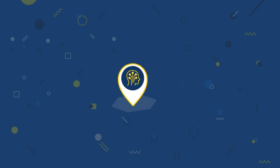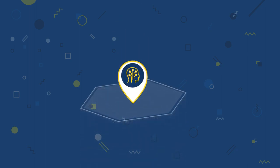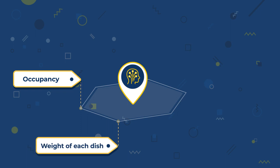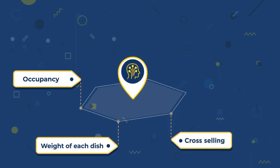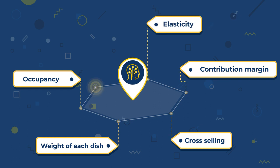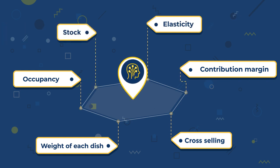Dynameat's artificial intelligence is based on six parameters: the forecast of the number of diners, the weight of each dish in demand, the potential for cross-selling, the contribution margin, the elasticity of the demand, and the stock.